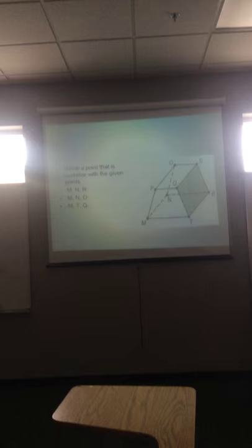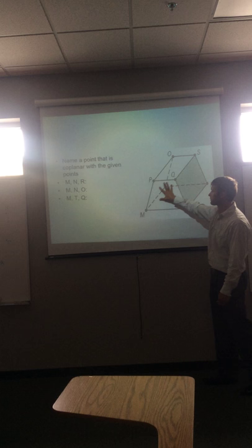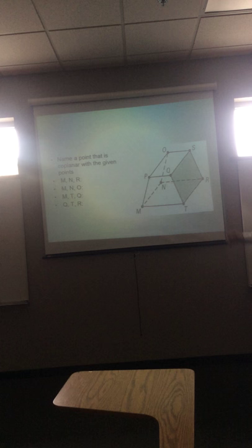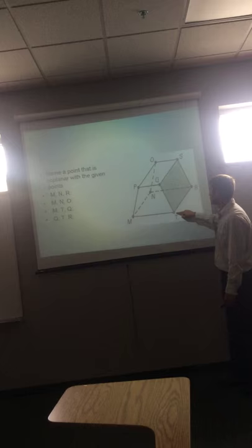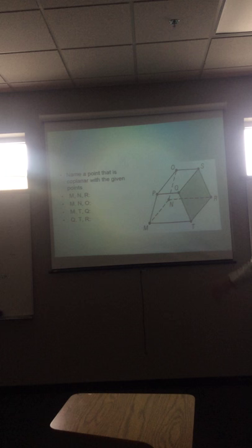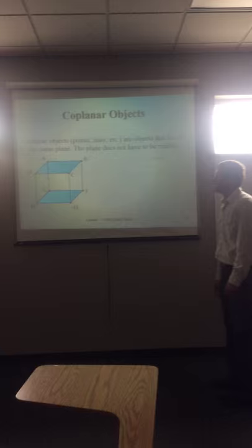M, T, Q. So you have M, T, and then Q is up here. So we are talking about this front part, and P is co-planar. And now we will go to the last one, Q, T, and R. So we have Q, T, and R, so I want you to write down this figure and then label which ones are co-planar with it.